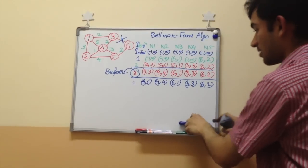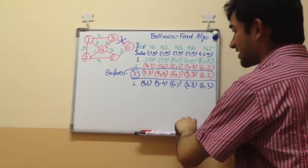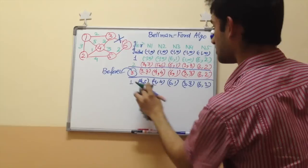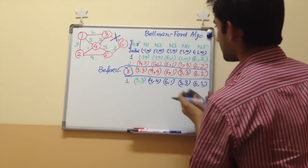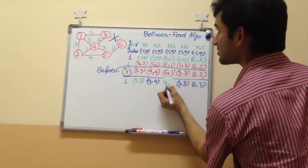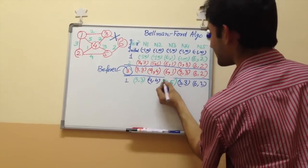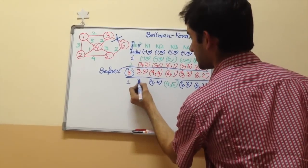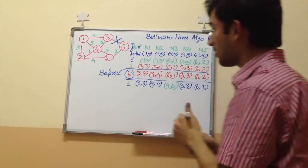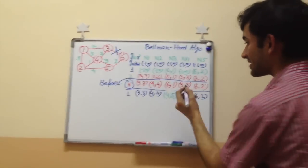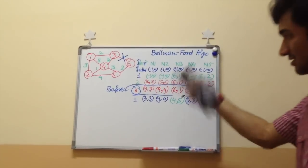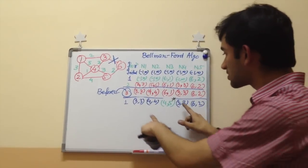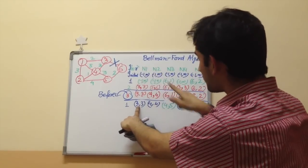For simplicity in this problem, whichever node changes you can mark it with a star — it's easier in the next part. Node 3 changed, so it is marked with a star. In the next iteration, whichever nodes were connected to node 3 — which are nodes 1 and 4 — have to be updated.